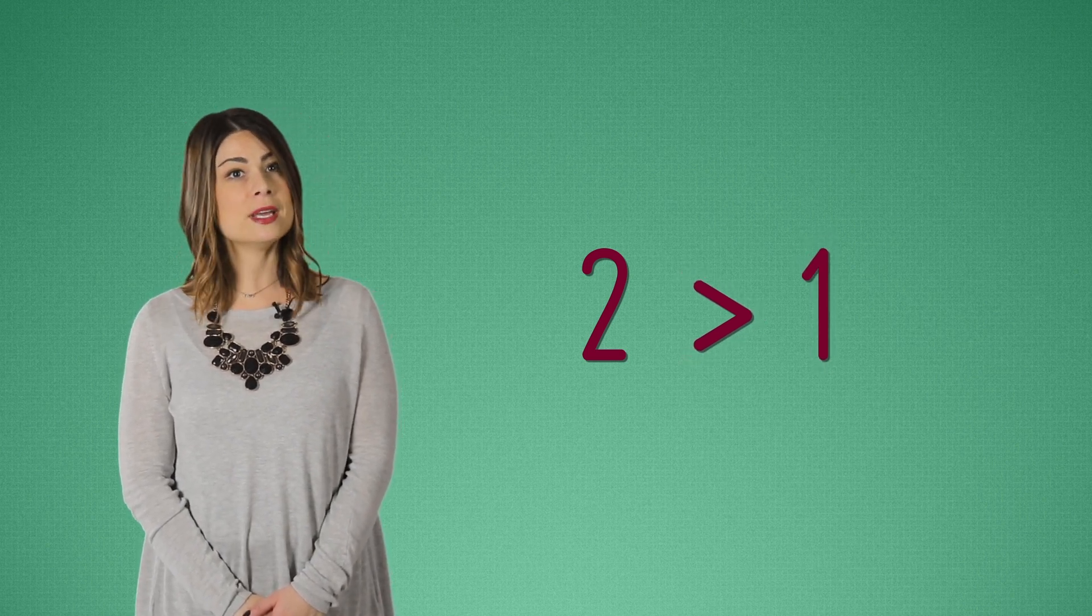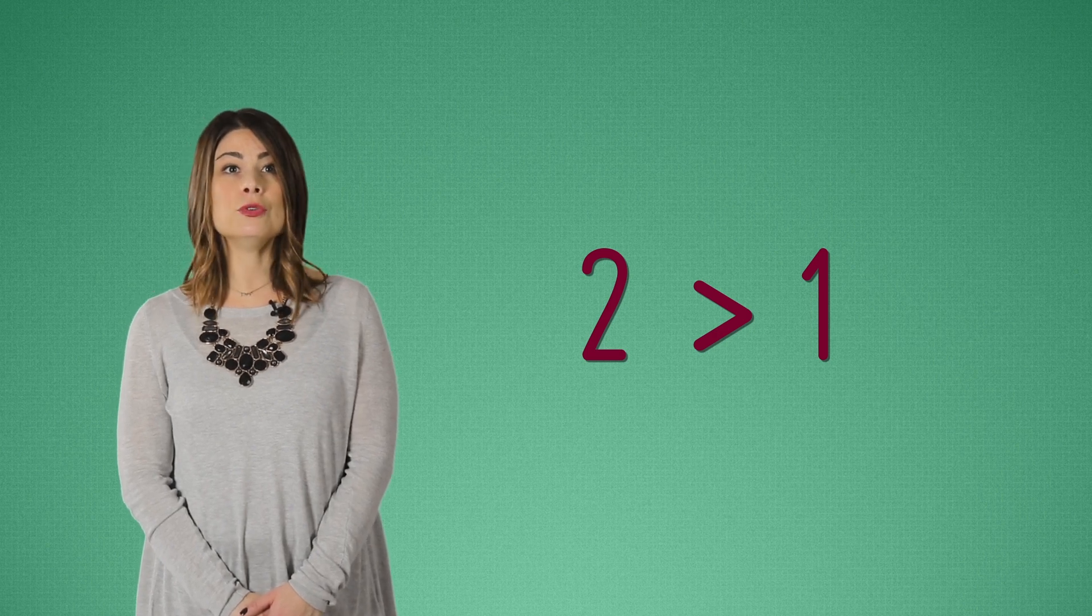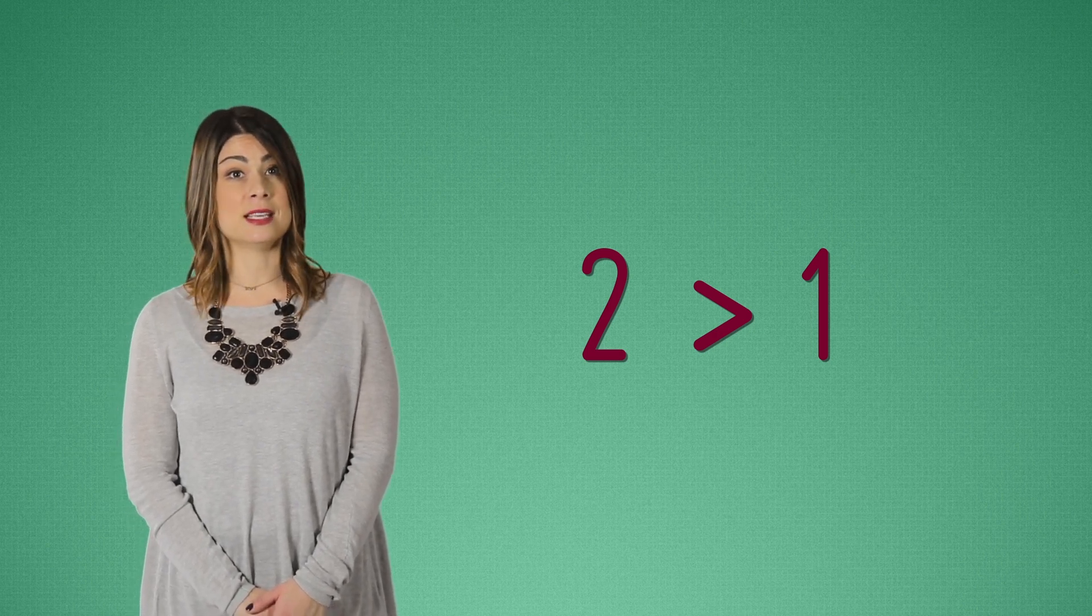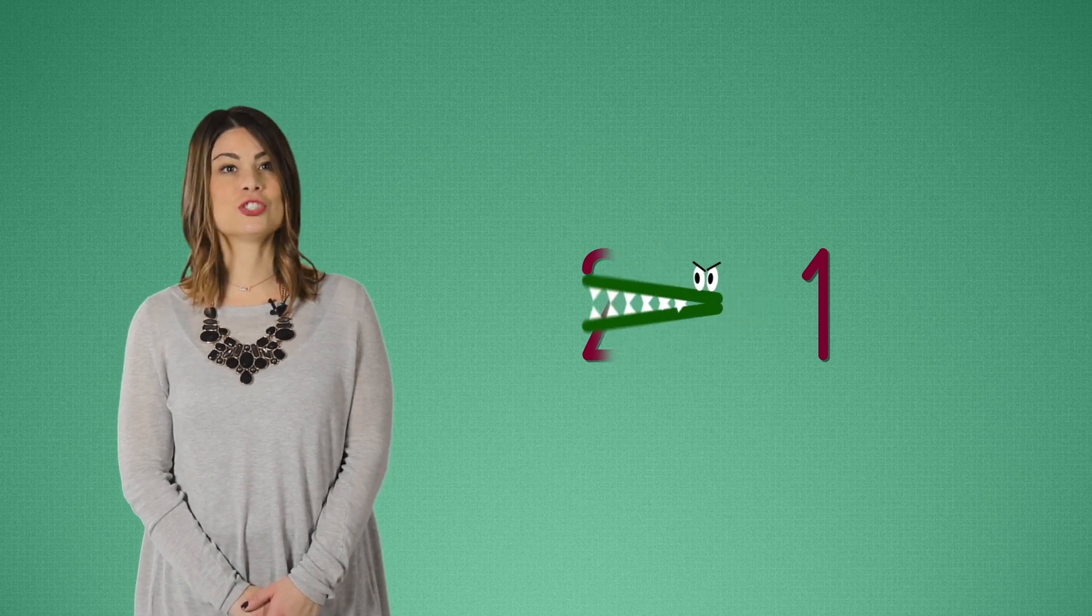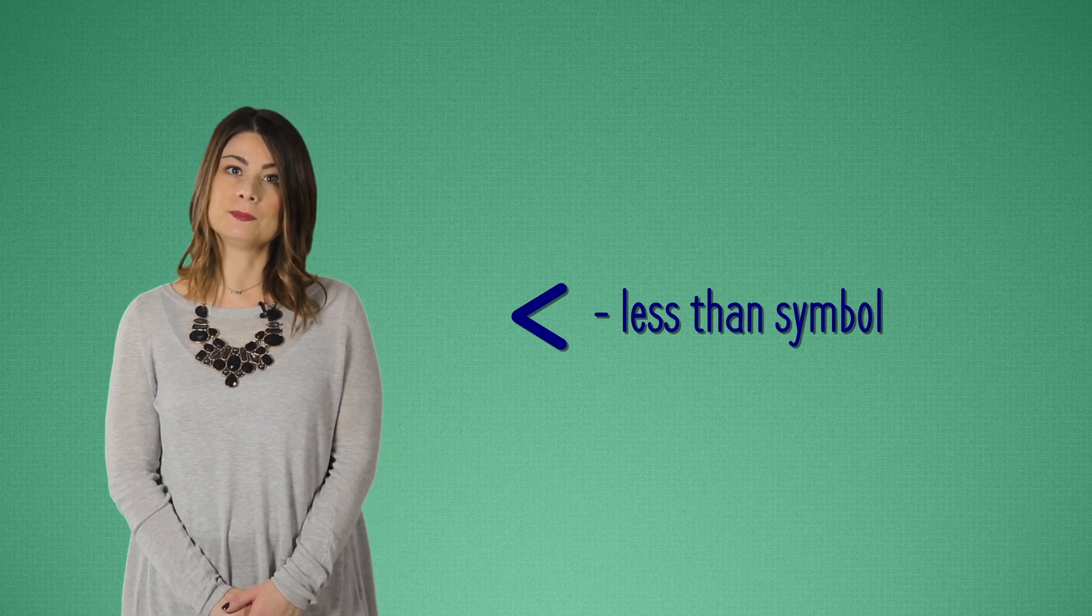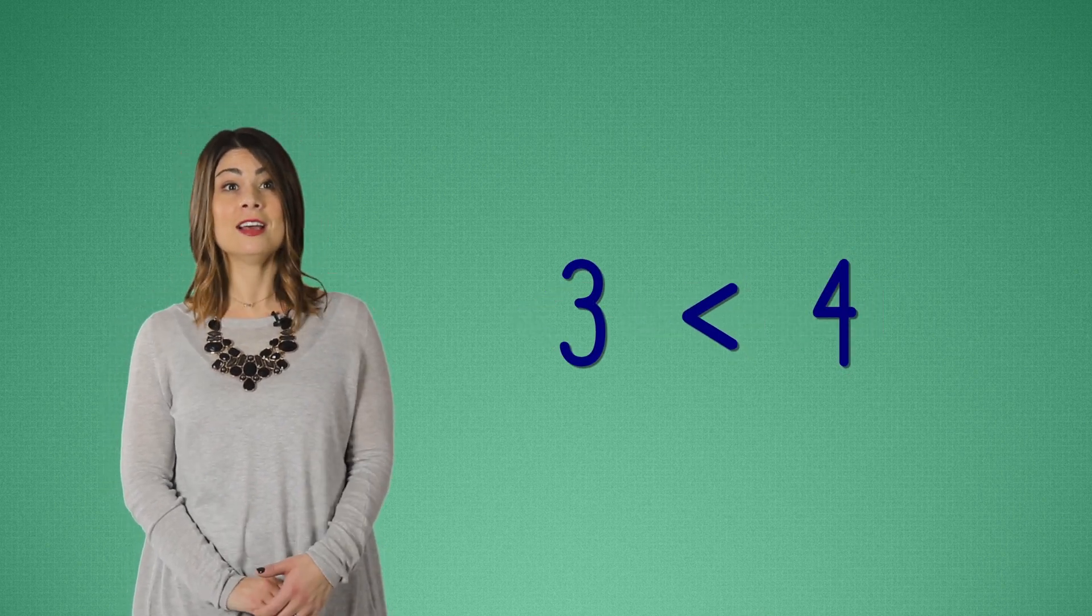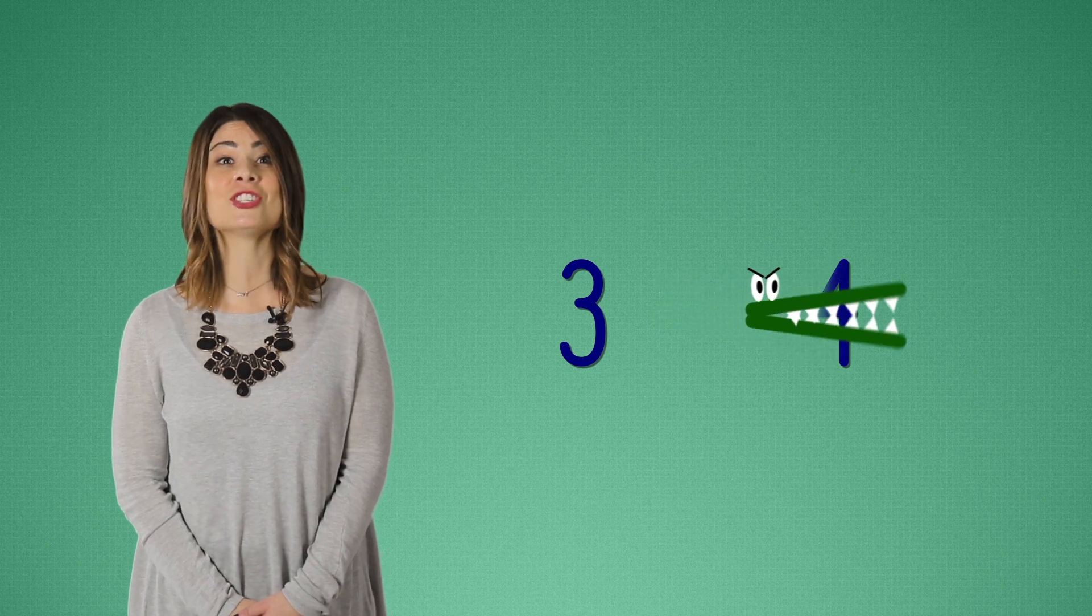So two is greater than one. You can picture this greater than symbol as a hungry alligator. It eats the larger side. The opposite is the less than symbol. Three is less than four. Look! The alligator eats the larger side.